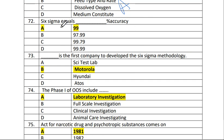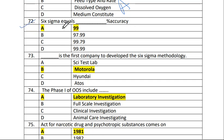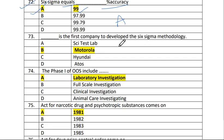Next is question number 72. Six Sigma equals 99% accuracy. The answer is A, 99% accuracy.